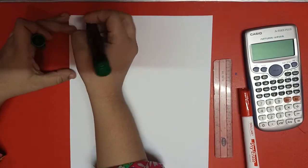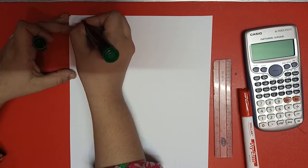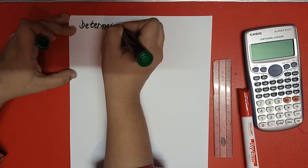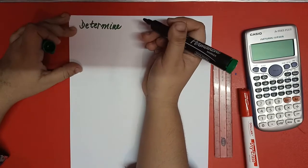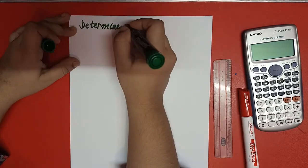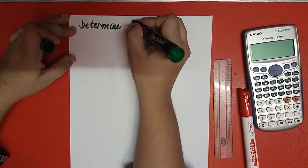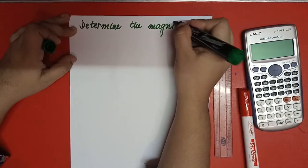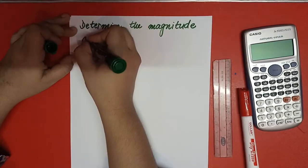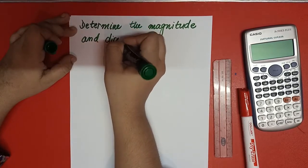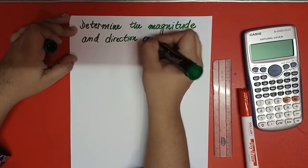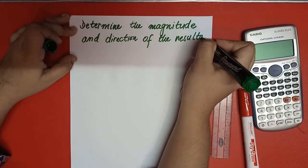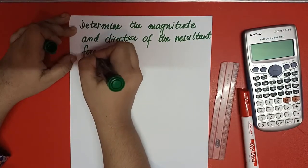Assalamu alaikum students, today we are going to discuss a numerical on the parallelogram method. We are going to solve four forces using the parallelogram method and find the resultant force of four forces in different coordinates. Determine the magnitude and direction of the resultant force FR.